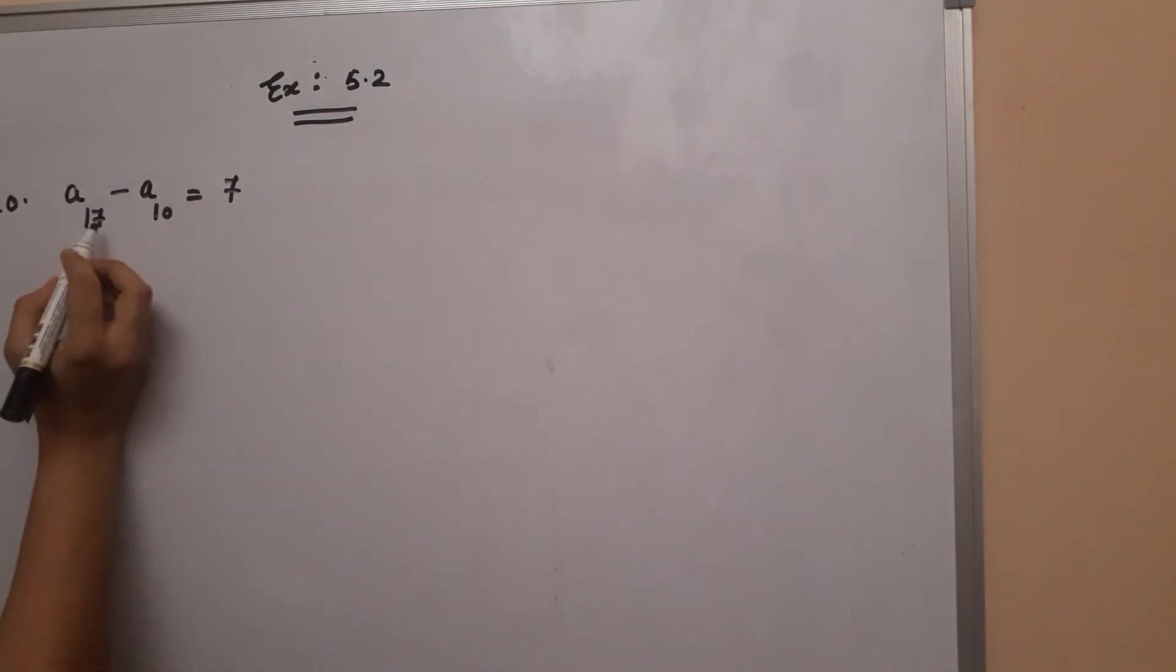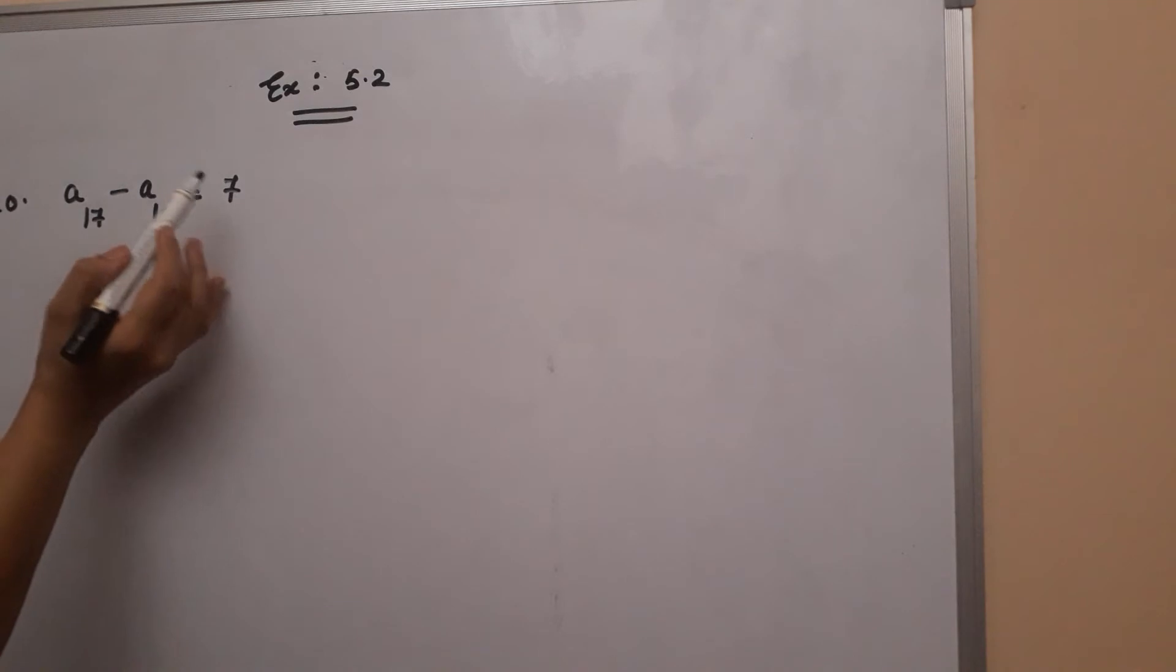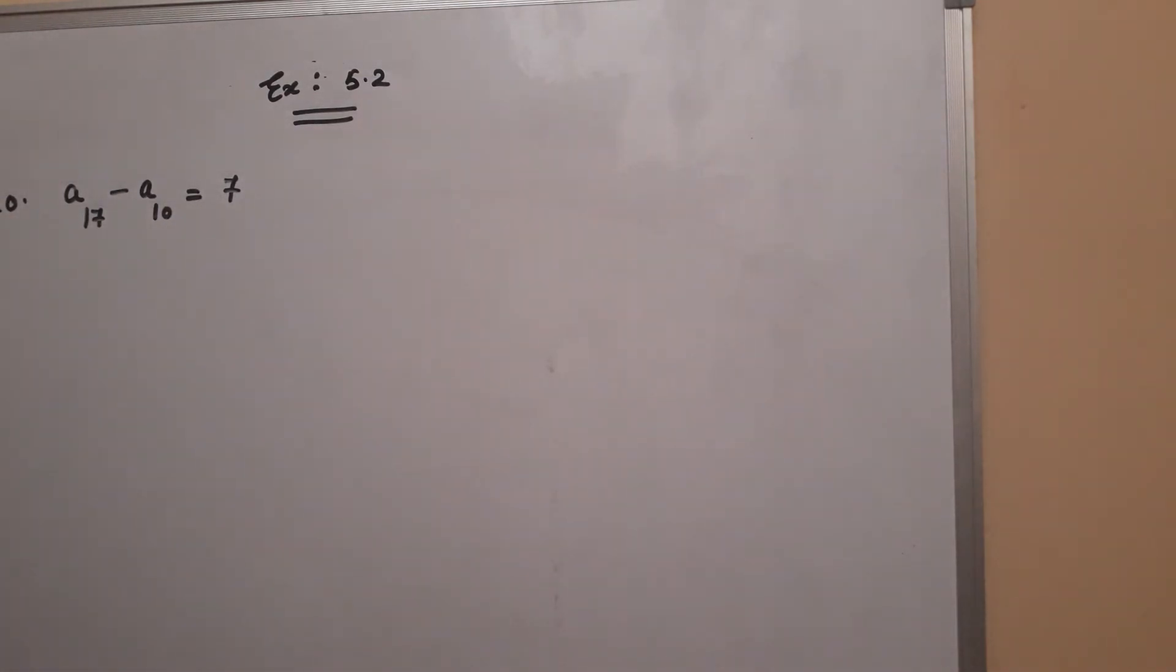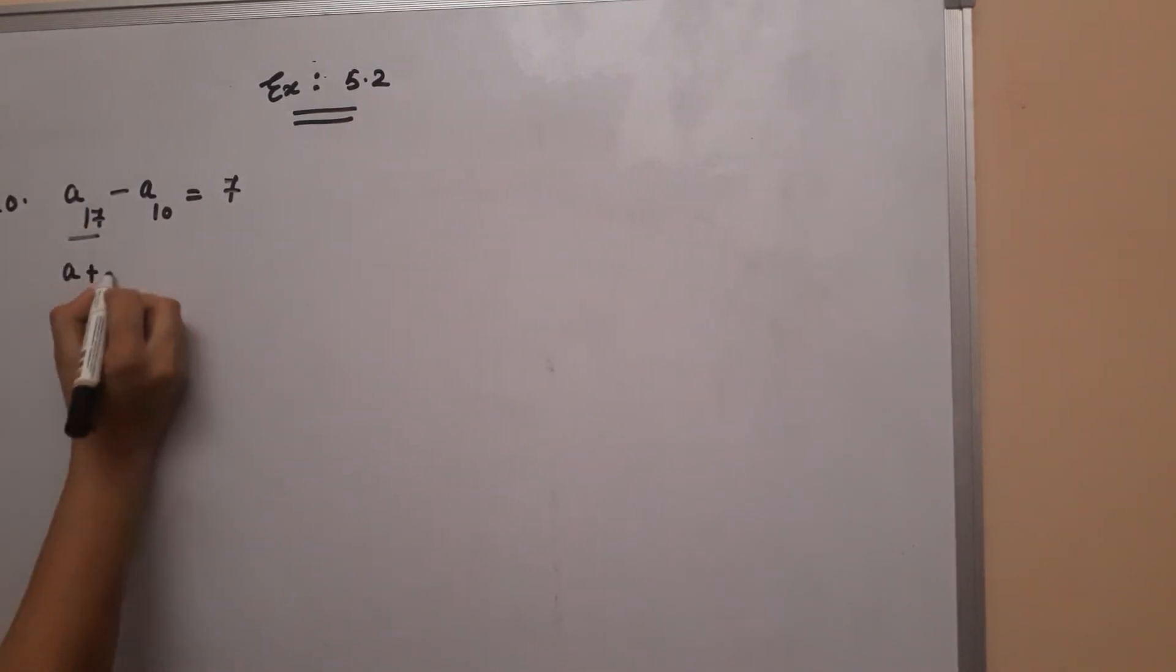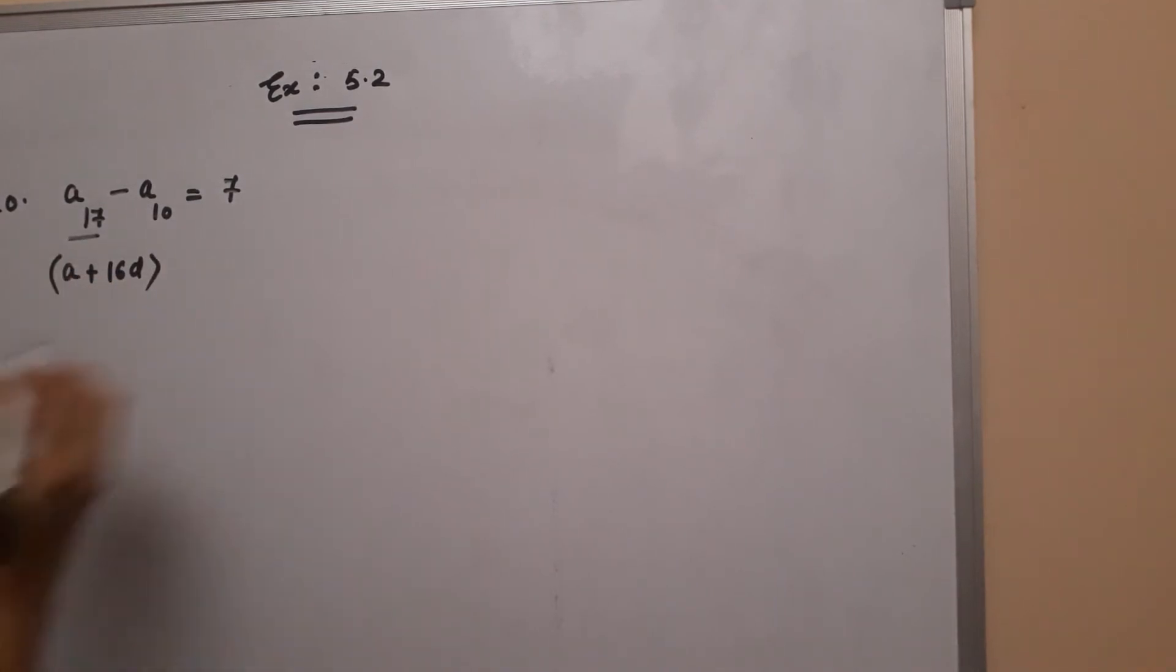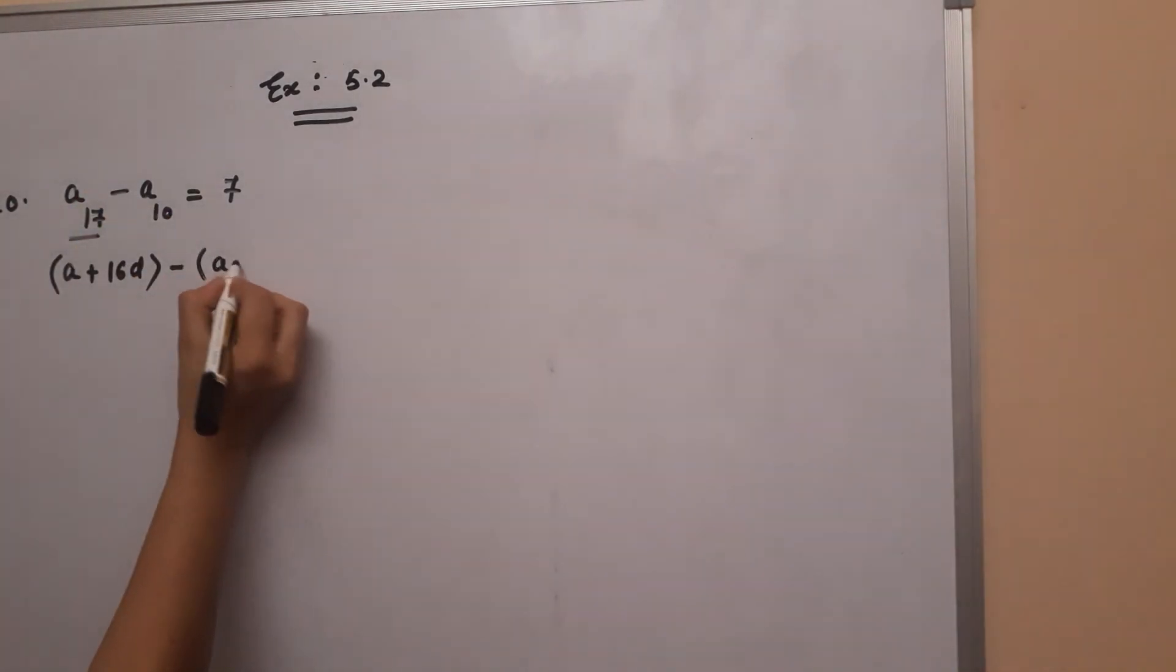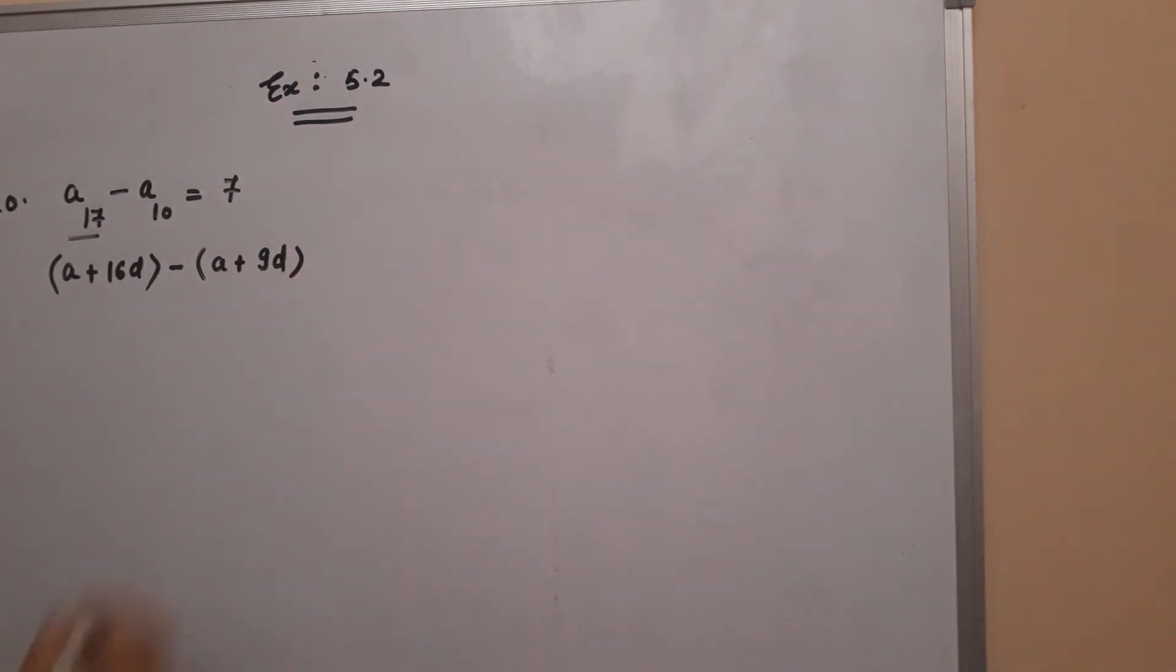The difference of both terms of the AP is 7. Now apply the formula: A plus 17D, which can be written as A plus 16D. Mark a bracket around it. Then, according to the question, A plus 9D will be written in place of A10, equals 7.